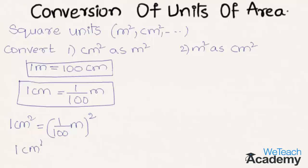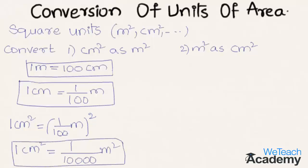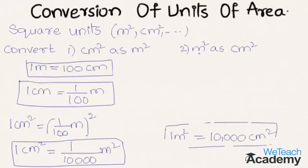So we get one centimeter square is equal to one by ten thousand meters square. And by just transferring ten thousand to the left hand side, we get one meter square is equal to ten thousand centimeters square.